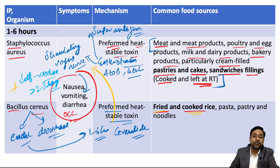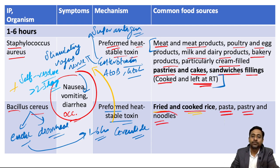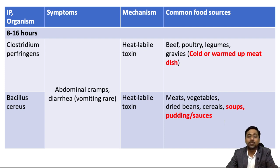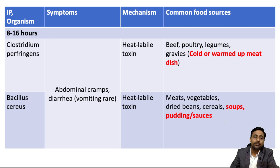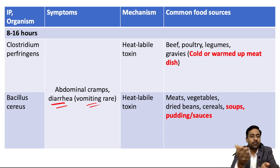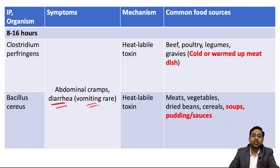Apart from fried and cooked rice, Bacillus cereus emetic food poisoning can also be caused by pasta, pastry, and noodles. For the 8 to 16 hour incubation period, there are two agents: Clostridium perfringens and the diarrheal type of Bacillus cereus. Here the primary symptom is diarrhea — vomiting is very rare — which is the opposite of the 1 to 6 hour group where nausea and vomiting are primary. Both of these food poisonings occur because of a heat-labile toxin.